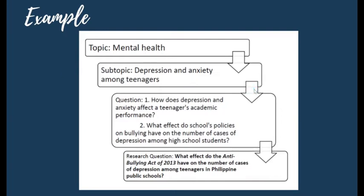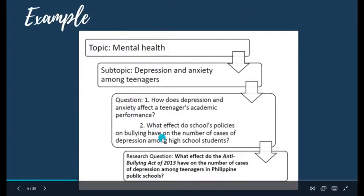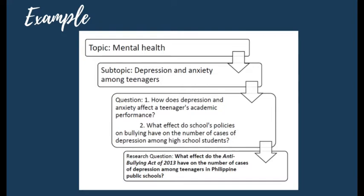Let's have an example. Consider the topic on mental health — that is your chosen topic, which is step one. Then, you look into what aspect you'd like to focus on; for example, depression and anxiety of teenagers — that completes step two. For step three, ask questions. Two possible questions could be: How does depression and anxiety affect a teenager's academic performance?